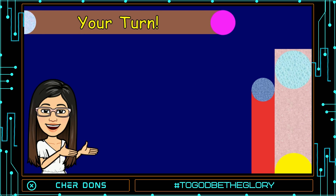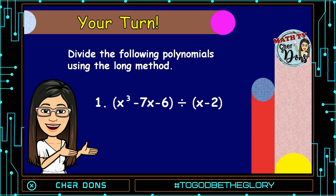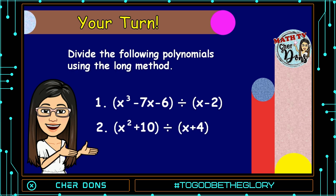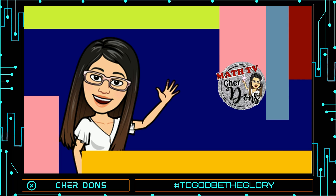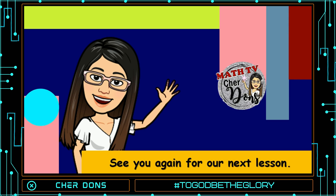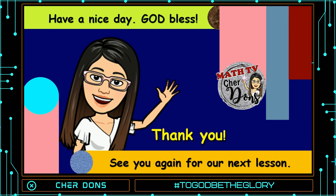Now it's your time to practice. Divide the following polynomials using the long method. Number 1: (x³ - 7x - 6) divided by (x - 2). Number 2: (x² + 10) divided by (x + 4). Don't forget to comment down your answer so we can check it. Good luck! I hope you enjoyed our discussion for today. See you again for our next lesson. Thank you, have a nice day and God bless everyone!